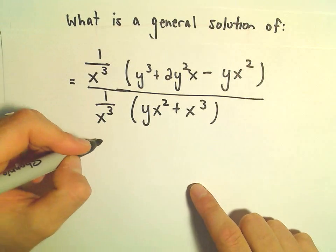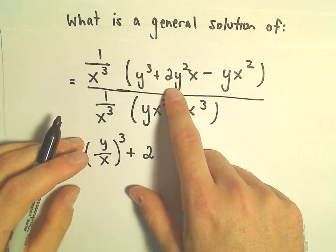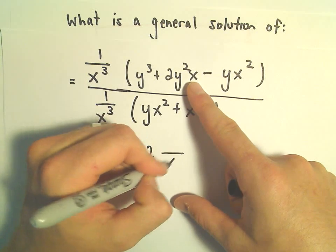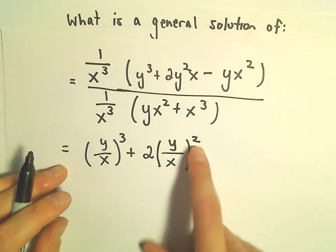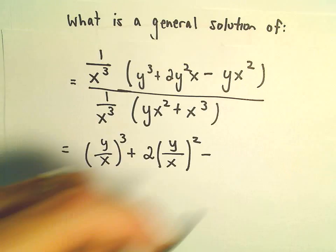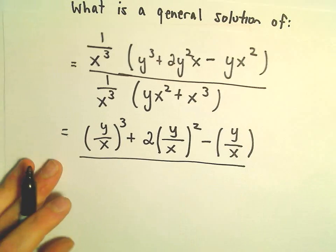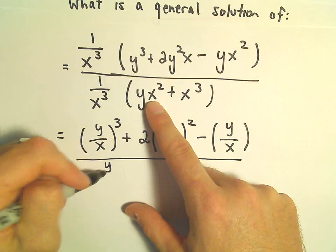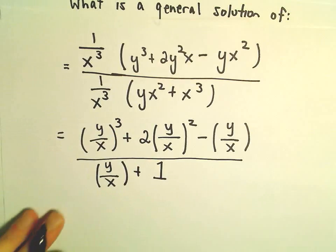We'll have y³/x³, which is (y/x)³. Then 2 times y²/x², written as 2(y/x)². Then taking x²/x³ leaves y/x. In the denominator, yx²/x³ leaves y/x, and x³/x³ leaves positive 1.